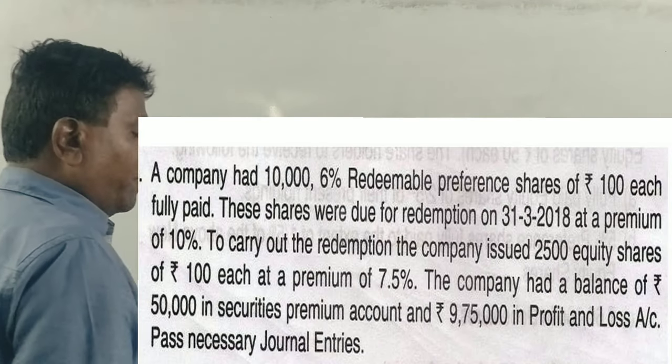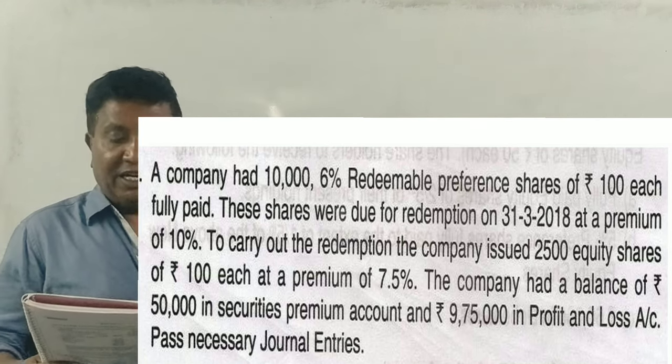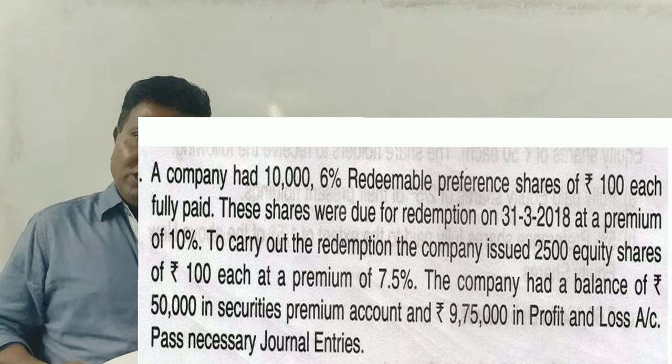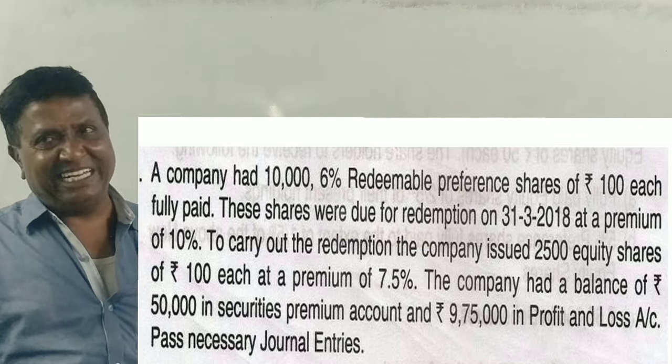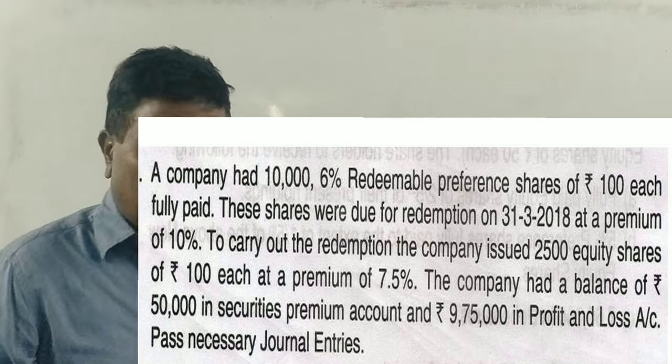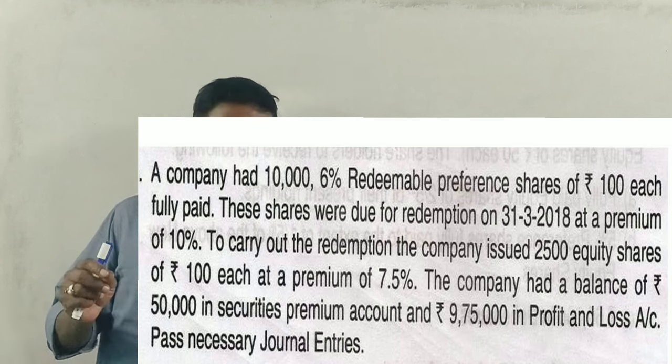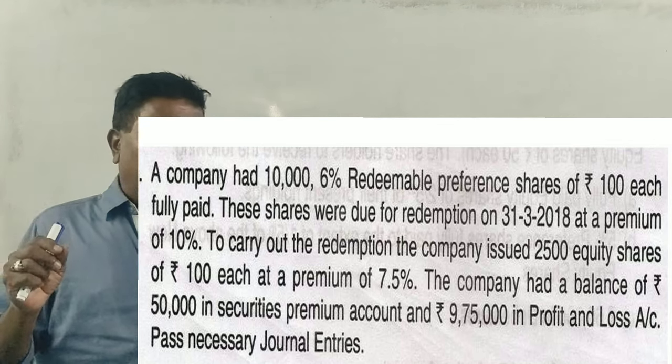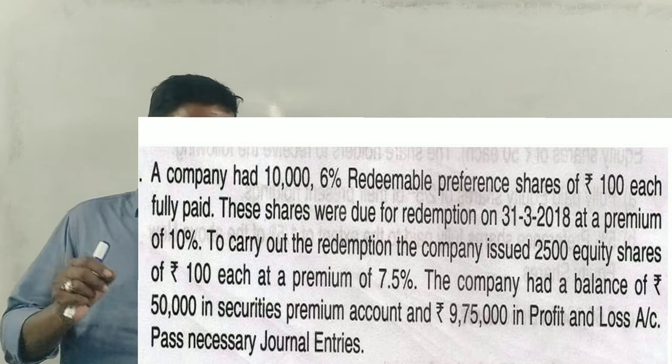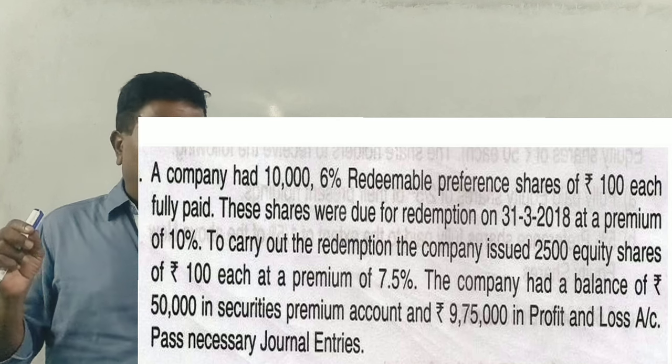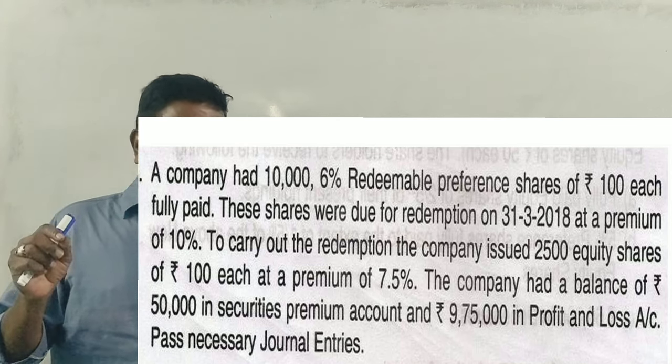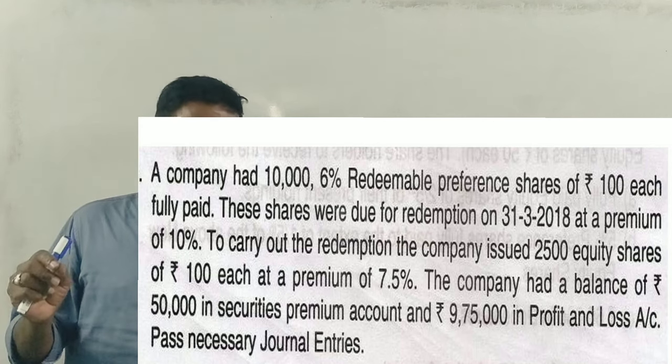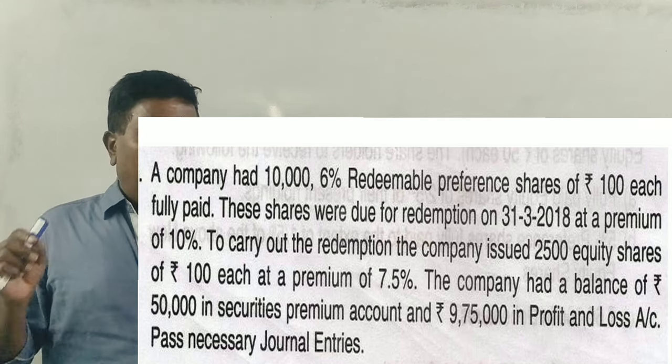Hi guys, ACA Advanced Corporate Accounting. In the 2018 exam, we have a question of 6 marks or 5 marks. This is the question from 2016, but we have to answer this. The question is: A company had 10,000 6% redeemable preference shares of 100 rupees each, fully paid. These shares were due for redemption on 31st March 2018 at a premium of 10%. To carry out the redemption, the company issued 2,500 equity shares of 100 rupees each at a premium of 7.5%. The company had a balance of 50,000 in securities premium account and 9,75,000 in profit and loss account. Pass necessary journal entries.